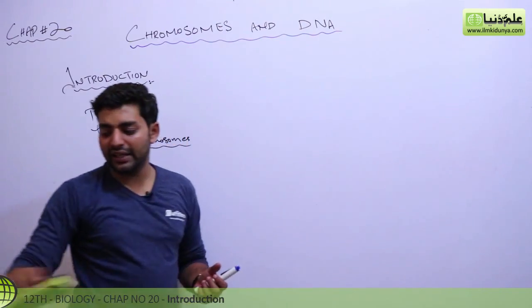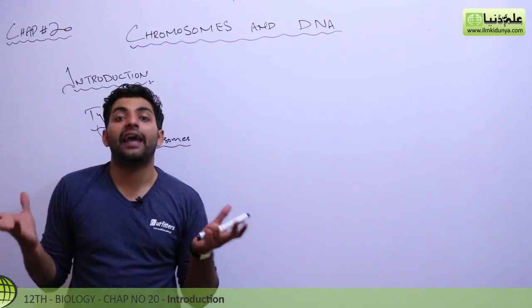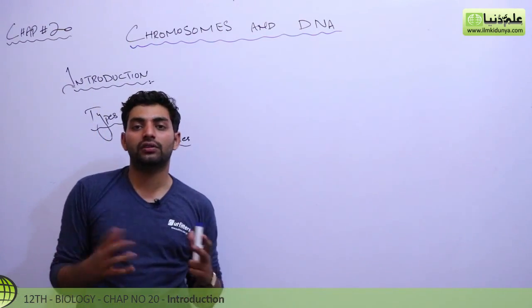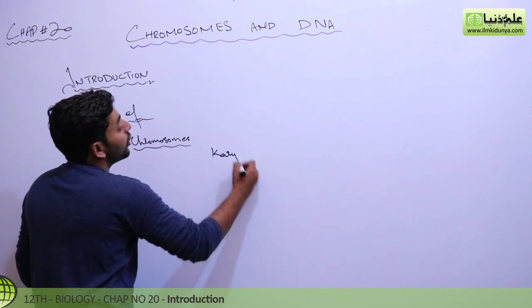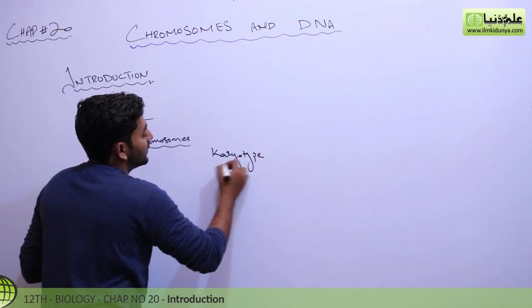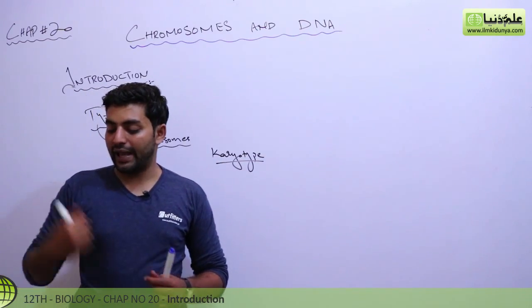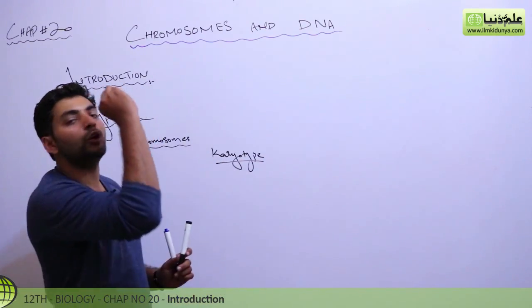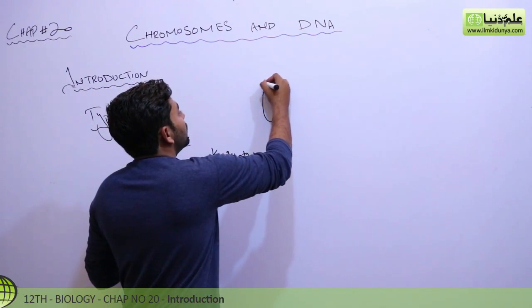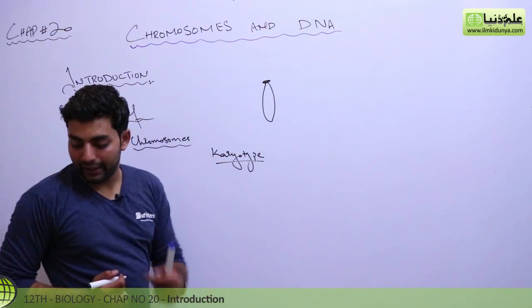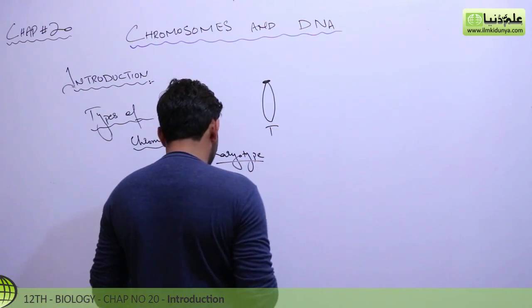Chromosomes are of different types. One organism's whole array of chromosomes is called the karyotype. You can have different types: telocentric, which is at the top of the centromere. We will call them telocentric.